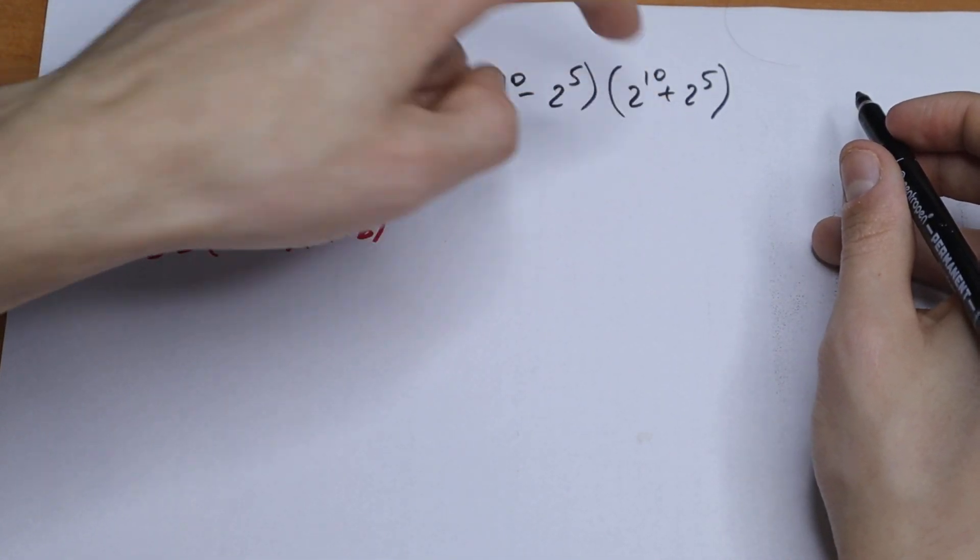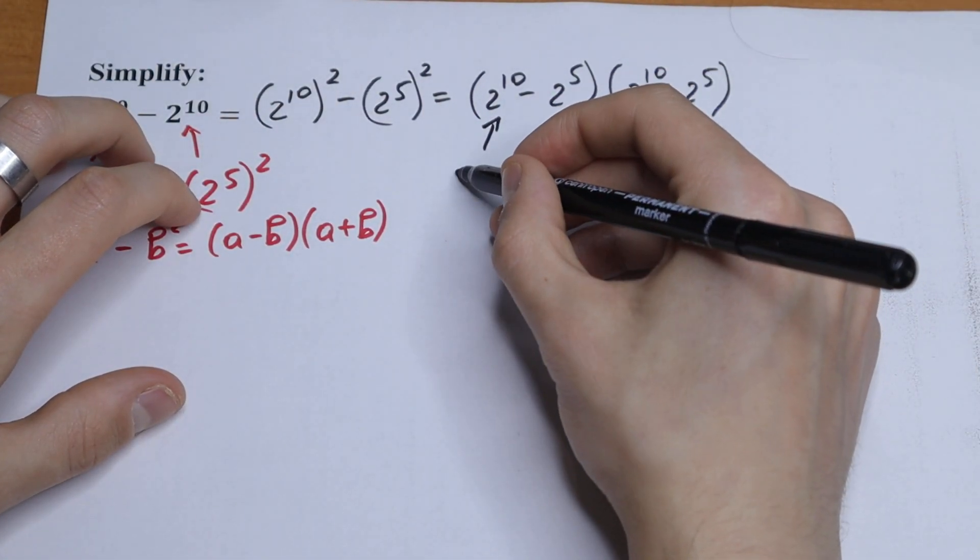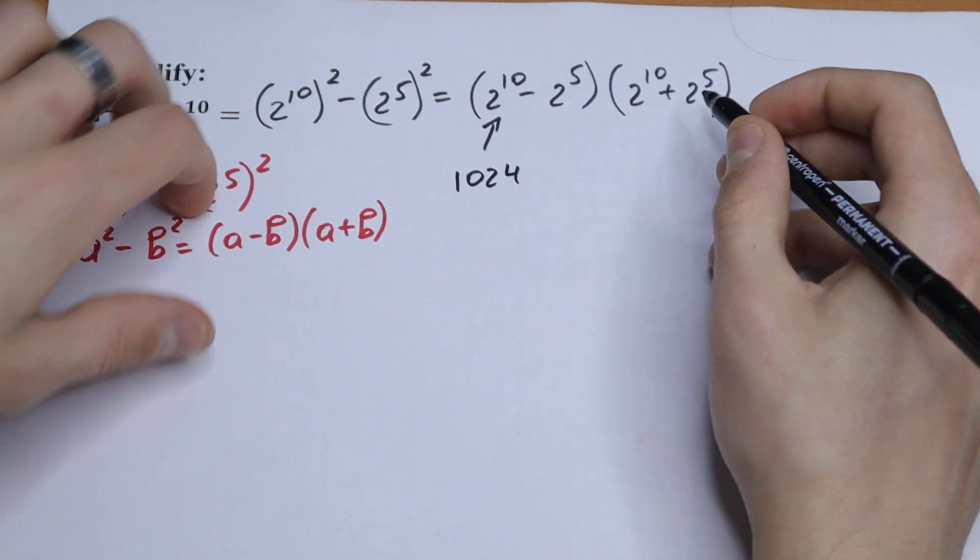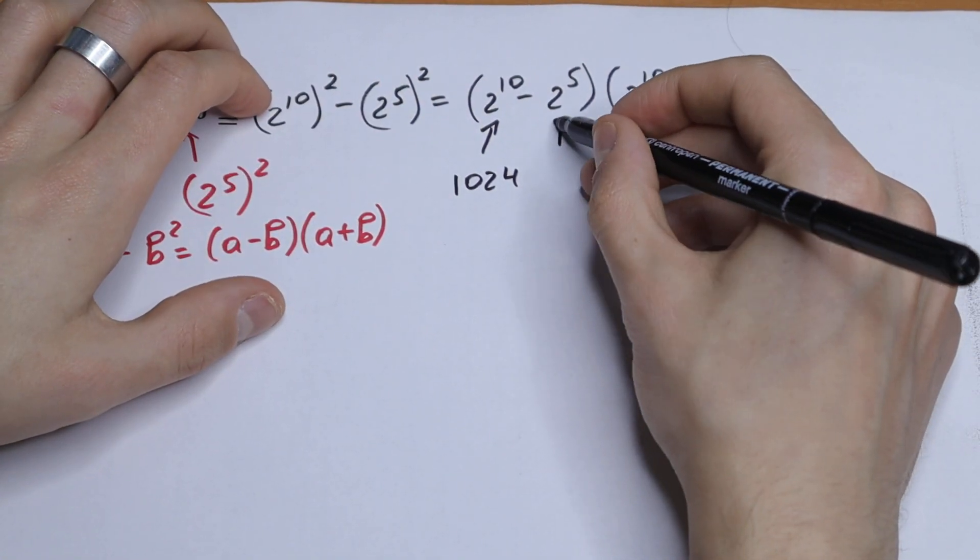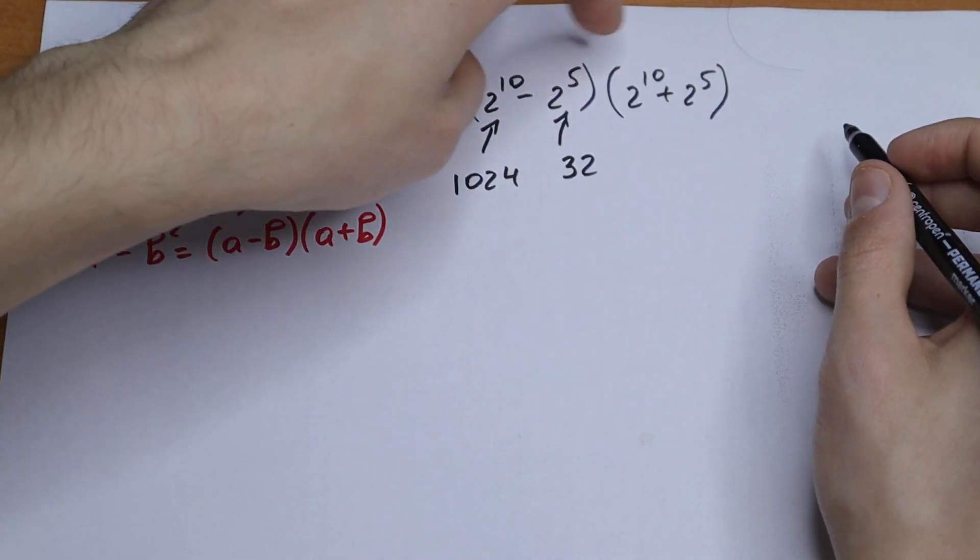Of course we know these values because 2 to the 10th power equals 1024, and 2 to the 5th power equals 32. This is a table of cases. So we can simplify these expressions.